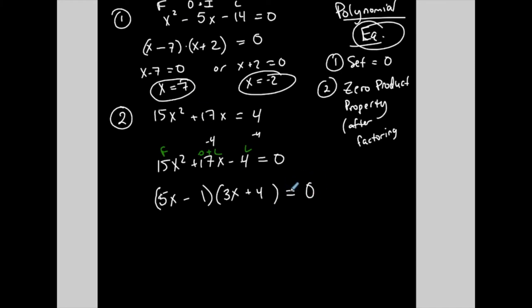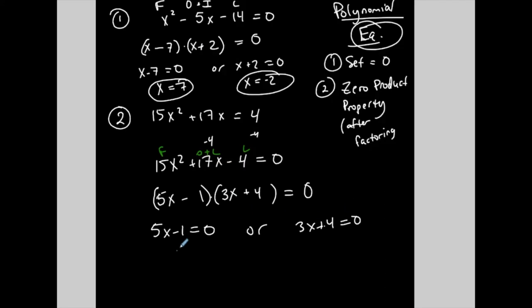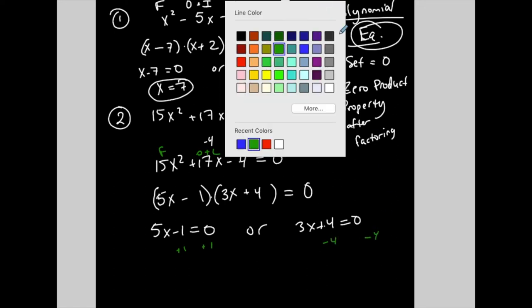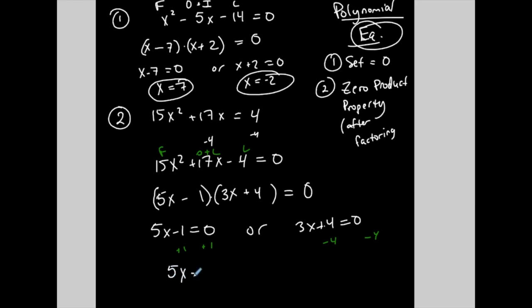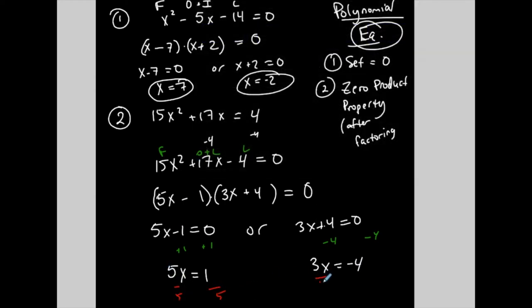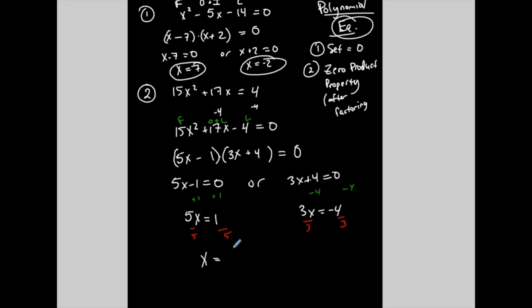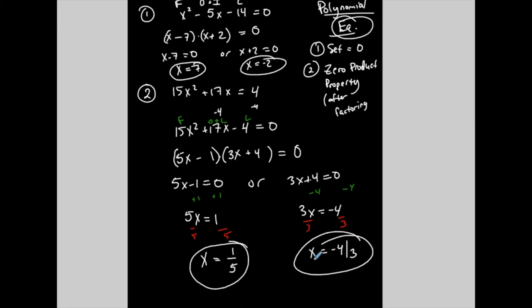But I'm not done, because I'm solving an equation. If I were simply factoring or representing the expression in factored form, I would be done — but I'm not. I want to solve this. What values of x make this true? I have a product equal to 0, which means the first portion or the second portion could be 0. Adding 1 and subtracting 4, I get 5x = 1 and 3x = -4. Dividing both sides by 5 gives x = 1/5, and dividing by 3 gives x = -4/3. Two solutions for a second-degree polynomial.